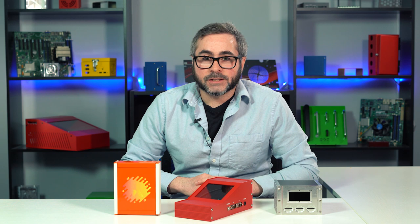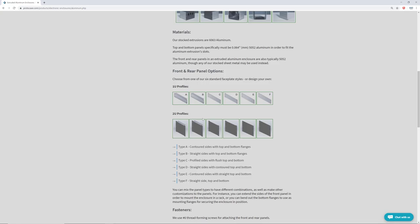We also offer a lot of customizable options for extruded enclosures, as your enclosures can be customized with a standard sheet metal faceplate. We showcase these styles on our website for both 1U and 2U profiles, and you can also mix these standard panel types with different combinations of side, top, and bottom panels to fit your requirements.